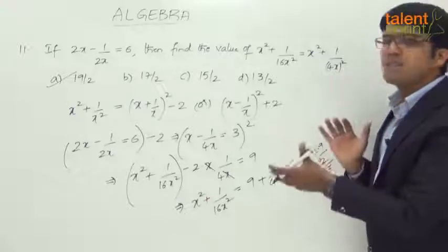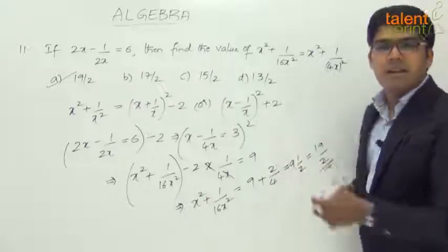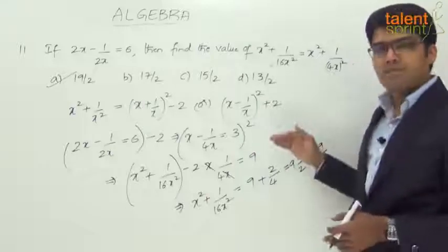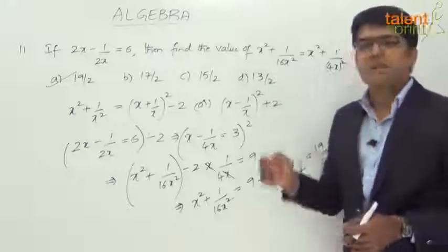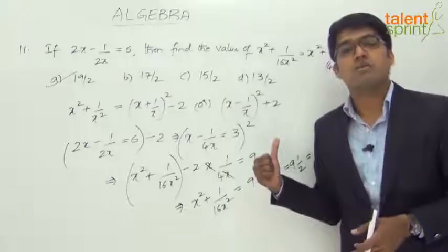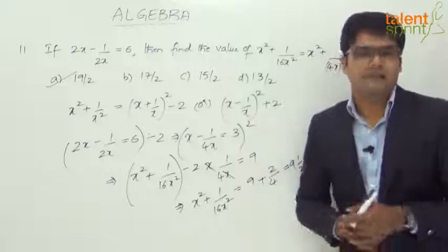So be careful. Though it looks to be similar, we cannot go with the identity there. We will have to do the expansion and get the required answer. So option A, 19 by 2, is the correct answer for this particular question, which was also an earlier SSC CGL exam paper question.